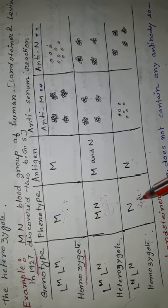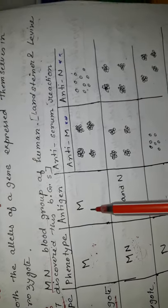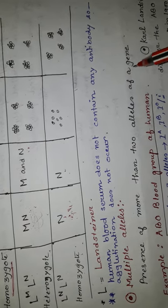So they divide the human population into three groups: one is M, another one is MN, and next one is N blood group. The M gene is responsible for producing M antigen. The N gene is responsible for producing N antigen. And the MN allele is responsible for producing both M and N antigens. Normally in the human body, the serum does not contain any antibodies for MN antigen. This antigen is present on the surface of RBC, and antibody is present in plasma.